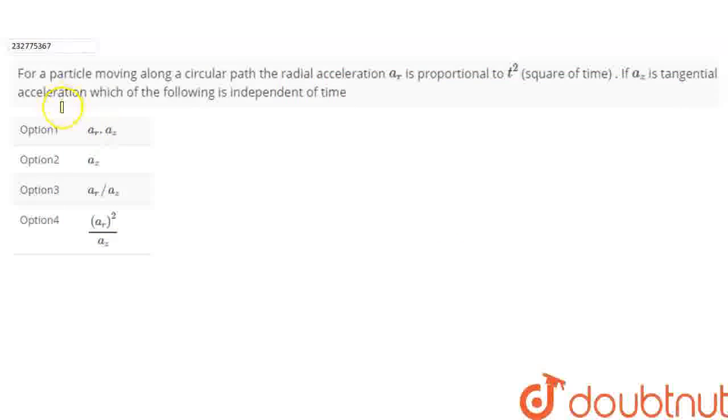Hello friends, what is given to me in this question? That for a particle moving along a circular path, the radial acceleration AR is proportional to t squared.